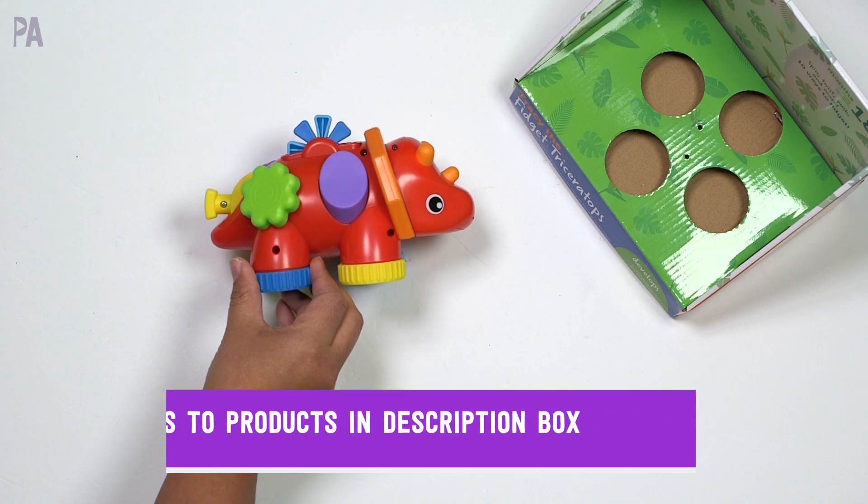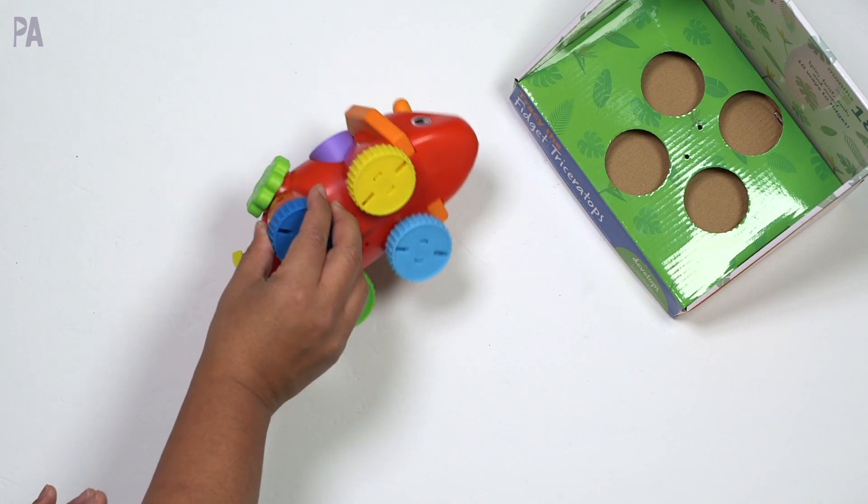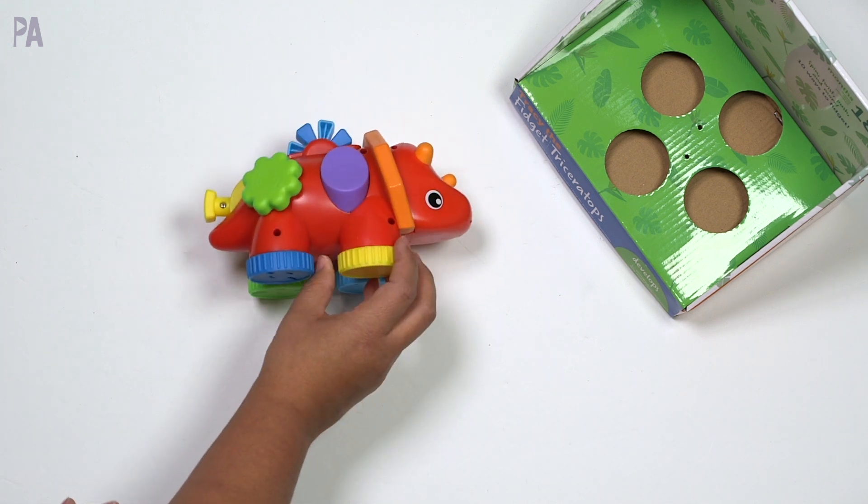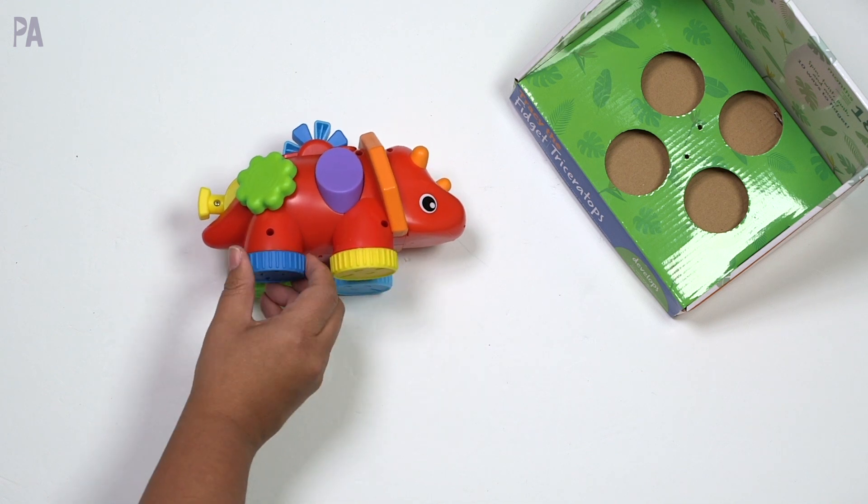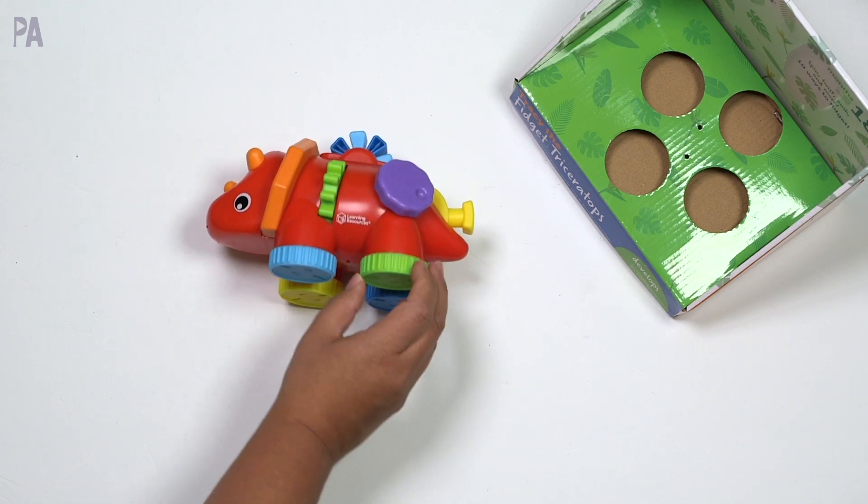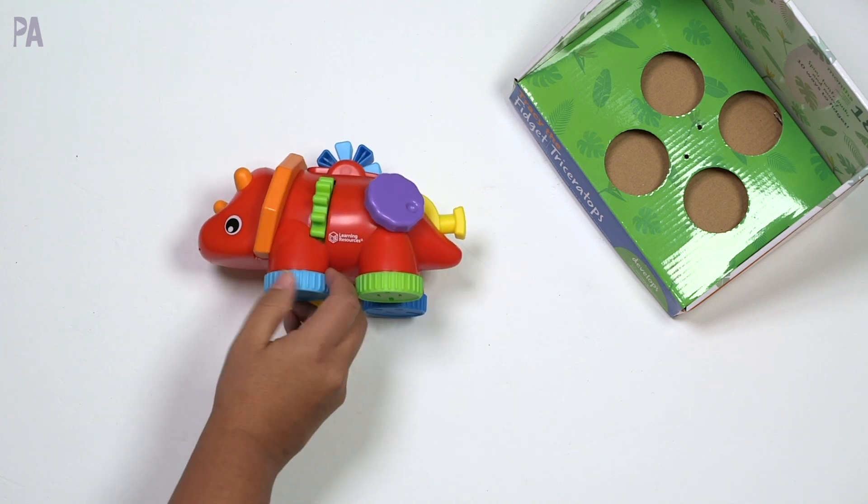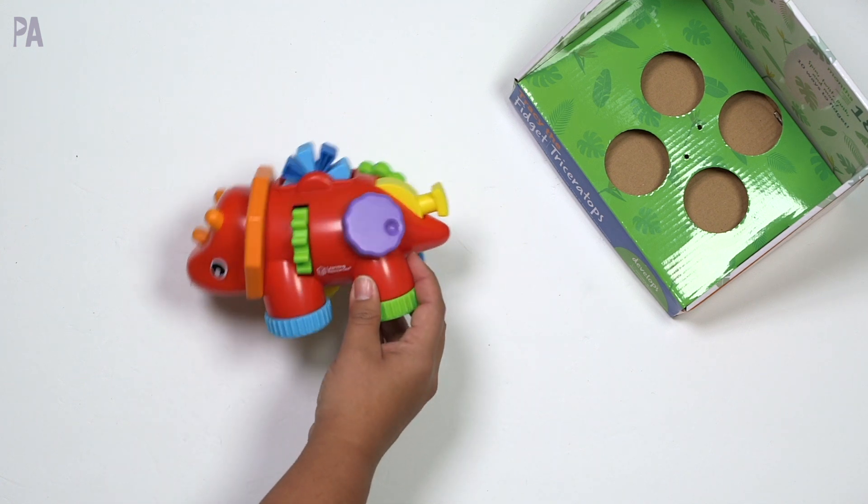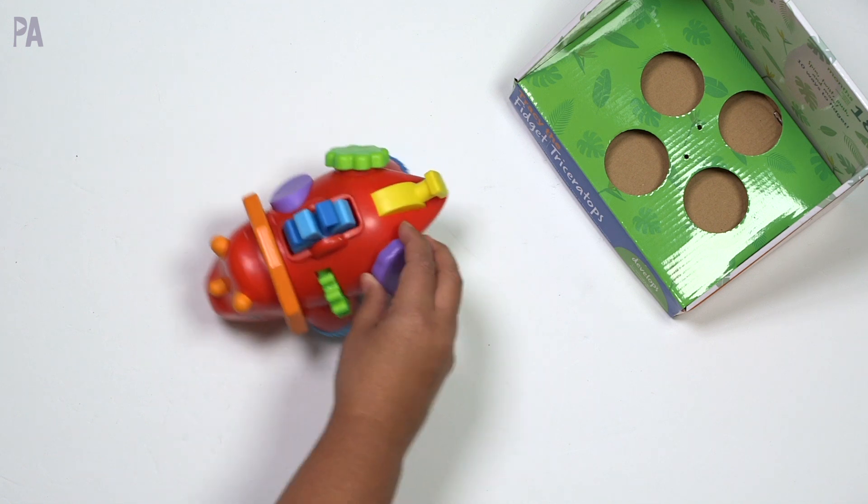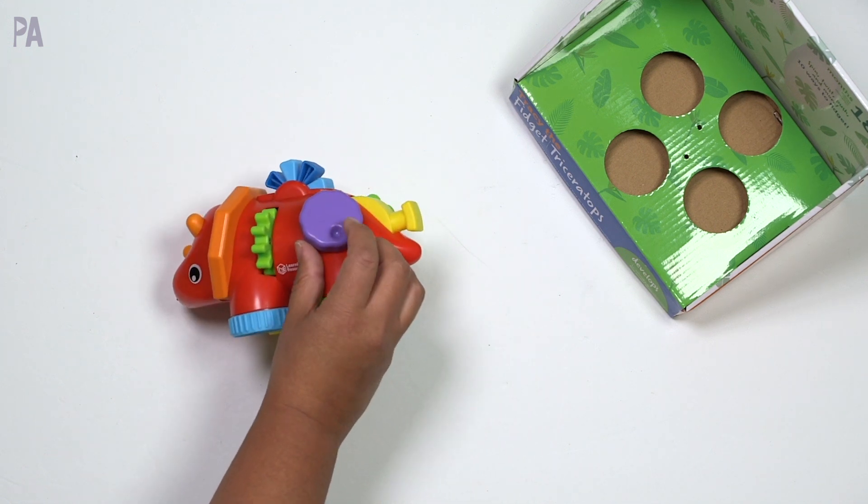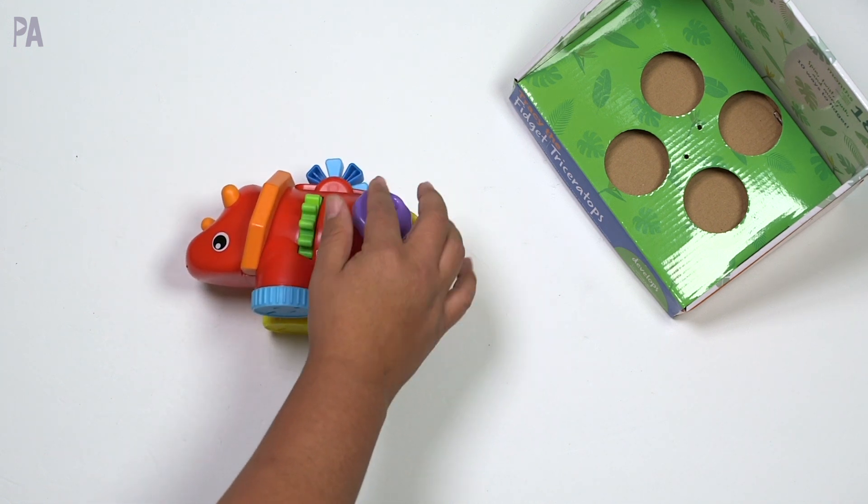Tracy has a little bit of fidgeting on every side of her so we have the bottom feet here which make noises as they turn. Different colors too so you can talk about colors. There's a nice little texture on them. On the side over here we have another knob to turn and there's even a little divot in there they can put their little finger in and spin it around.